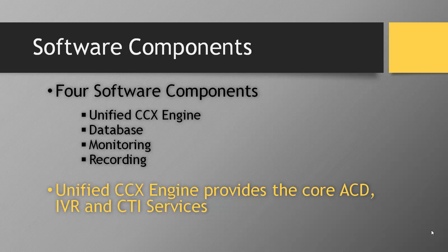The Unified CCX engine, which is the first software component, provides core functions like ACD — automatic call distribution to agents based on their skills, resource group, or agent-based routing. It also provides IVR functions like collecting digits, queuing callers, and other functions such as CDI services.